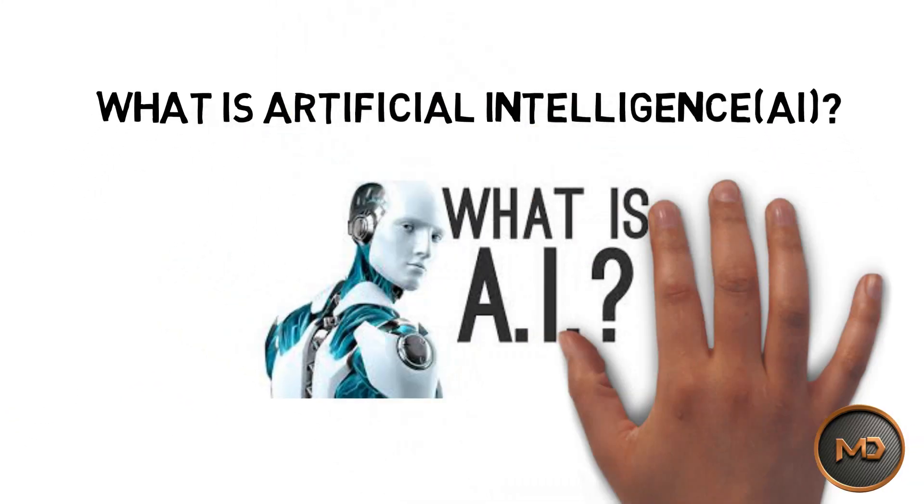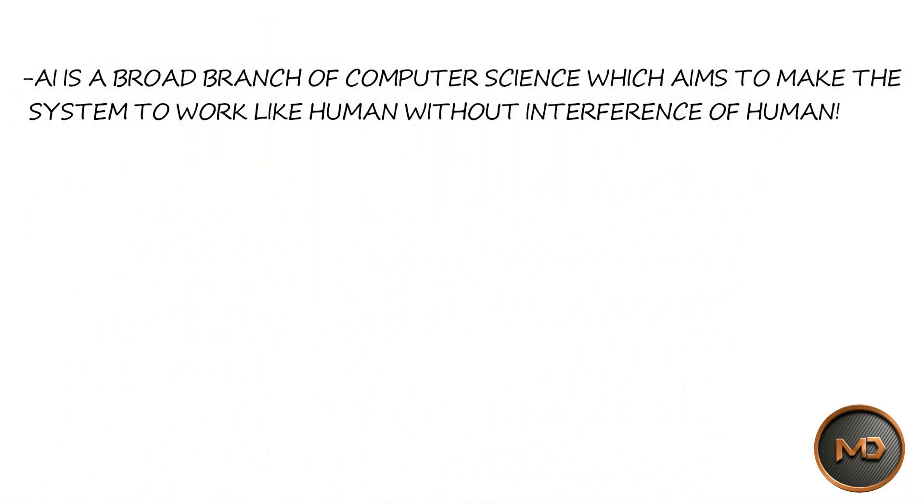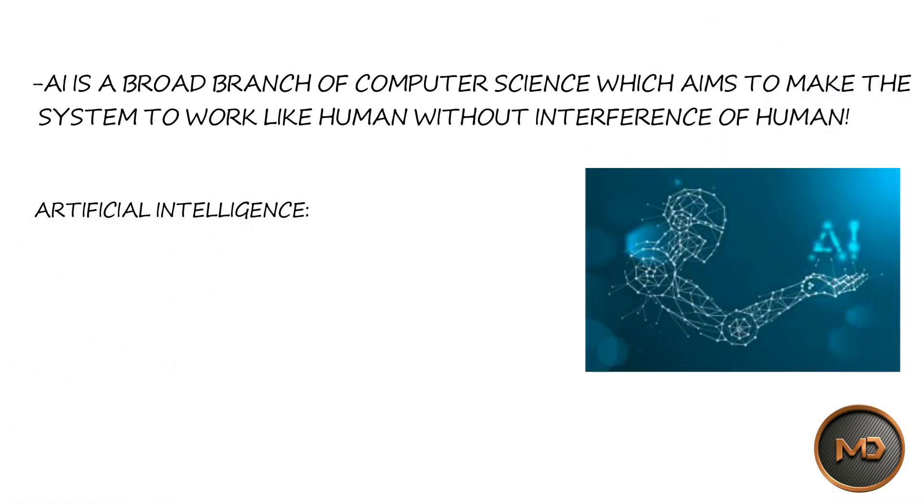What is AI? AI is a branch of computer science which aims to make the system to work like human without interference of human.